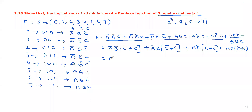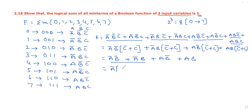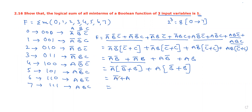Since C dash plus C equals 1, the remaining product terms simplify to A dash B dash plus A dash B plus AB dash plus AB. Taking A dash common gives A dash times (B dash plus B), and taking A common gives A times (B dash plus B). Since B dash plus B equals 1, this gives A dash plus A, which equals 1. Therefore the problem is solved.